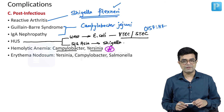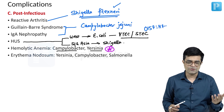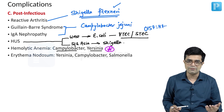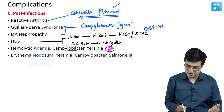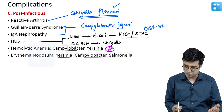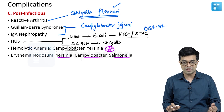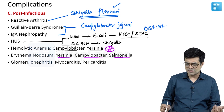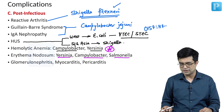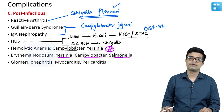Then, erythema nodosum — a dermatological manifestation associated with Yersinia, Campylobacter, and Salmonella. Glomerulonephritis, myocarditis, and pericarditis are the other post-infectious complications.